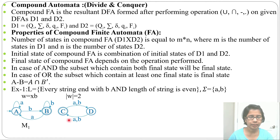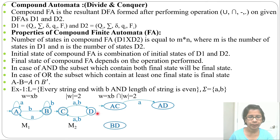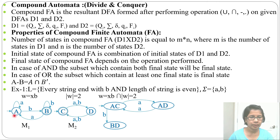Now I'll combine these two DFAs. The initial state will be AC (combining both initial states). From AC by a: A goes to A, C goes to D, so AC by a goes to AD. From AC by b: A goes to B, C goes to D, so AC by b goes to BD. From AD by a: A goes to A, D goes to C, so AD goes to AC. From AD by b: A goes to B, D goes to C, so AD by b goes to BC.